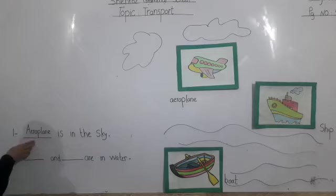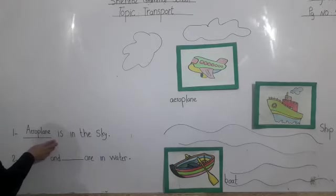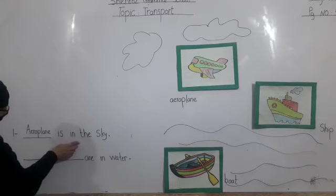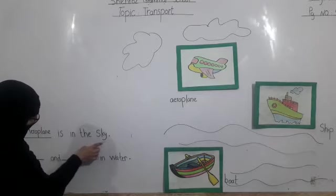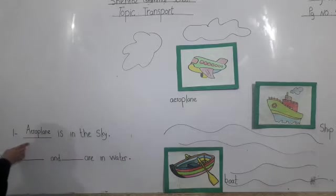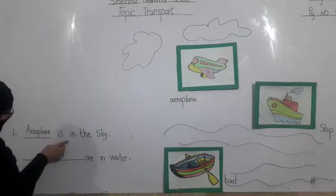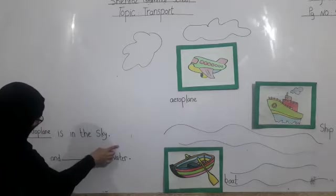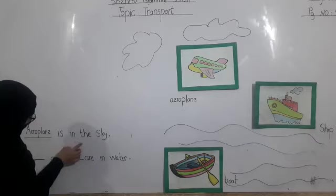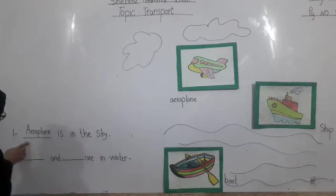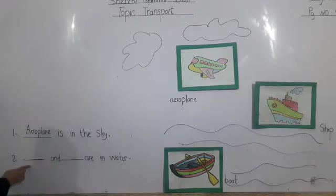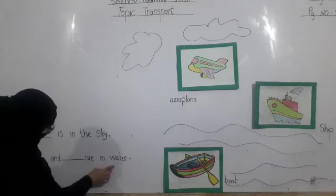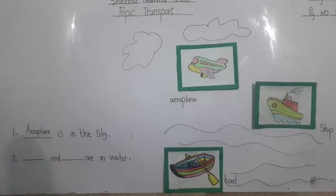Now let's read the sentence: Aeroplane is in the sky. Aeroplane is in the sky. The next blank: dash and dash are in water. Now tell me, what do you write in the blanks?